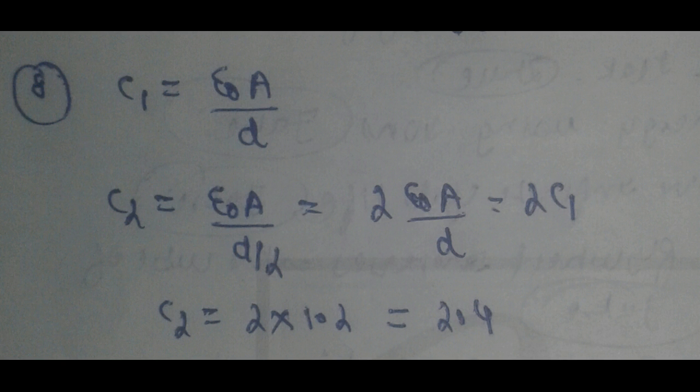Now we have to reduce the distance by a factor of two, so C2 becomes ε₀A/(d/2), we get 2ε₀A/d, that is 2C1. So the answer is C2 = 2 × C1. We have C1 equal to 1.2, so the correct answer is 2.4 microfarad. So the answer for question number eight is 2.4.